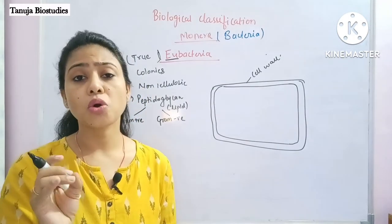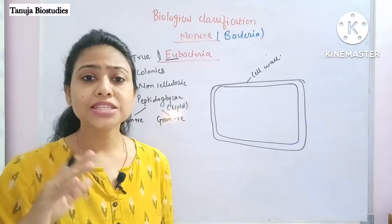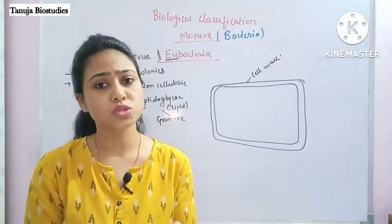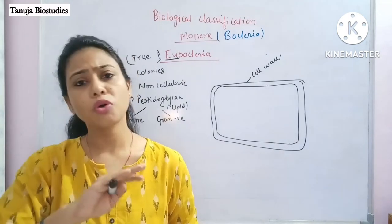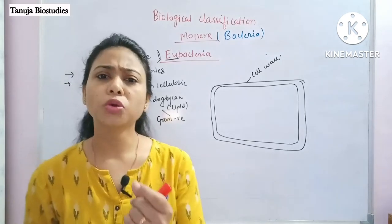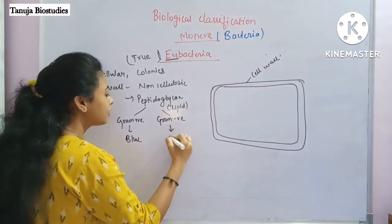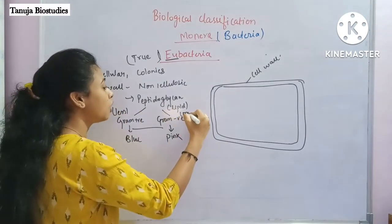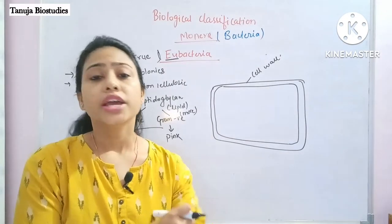Gram staining was done by scientist Christian Gram. When bacteria are stained with crystal violet, all bacteria turn blue. After washing with ethanol, some bacteria lose the blue color and become colorless; when re-stained with safranin, those colorless bacteria turn pink. So gram-positive bacteria appear blue and gram-negative bacteria appear pink. This is based on their lipid content — gram-positive has less lipid, gram-negative has more.